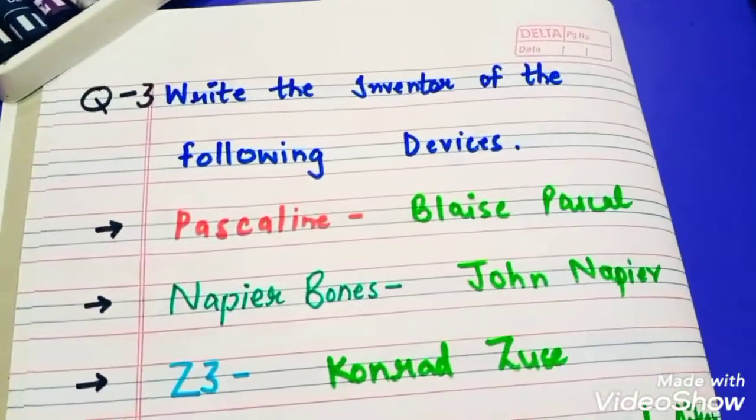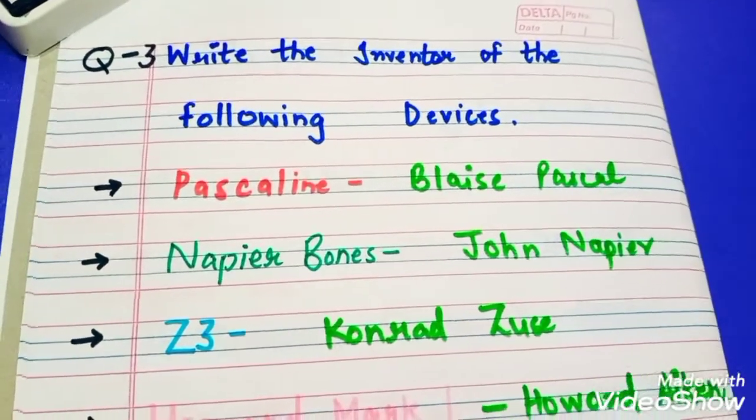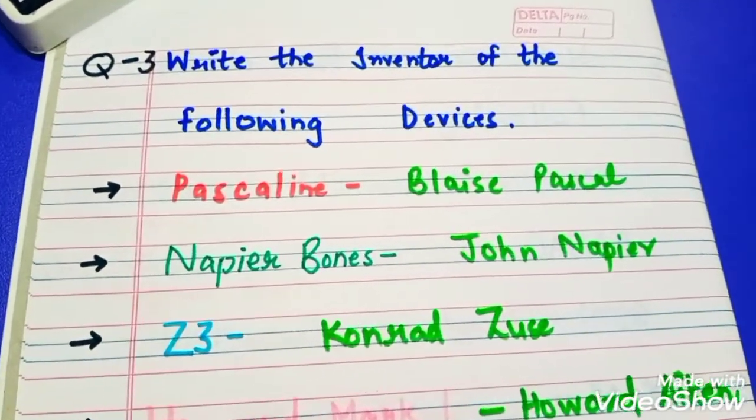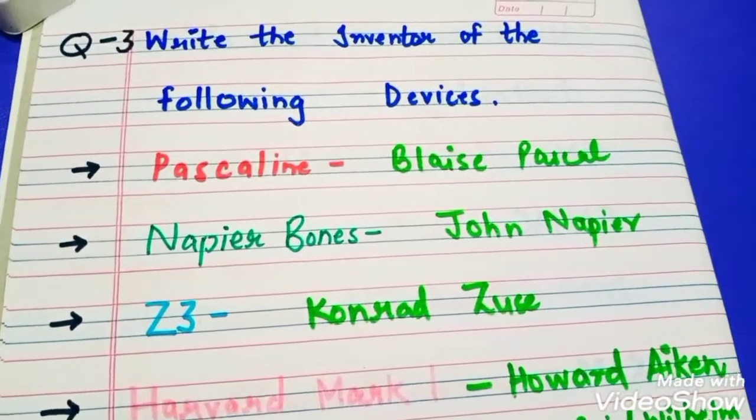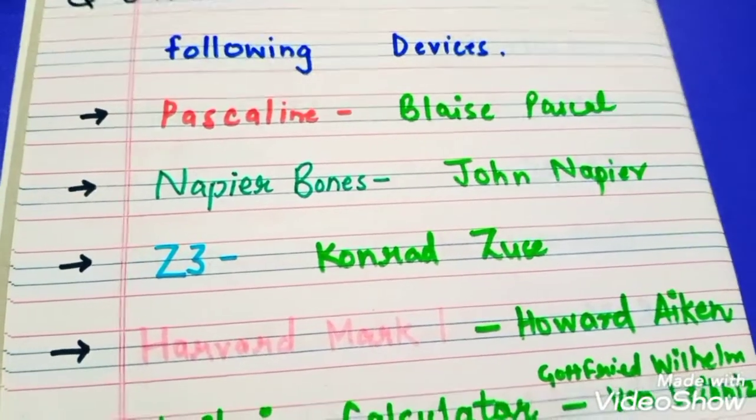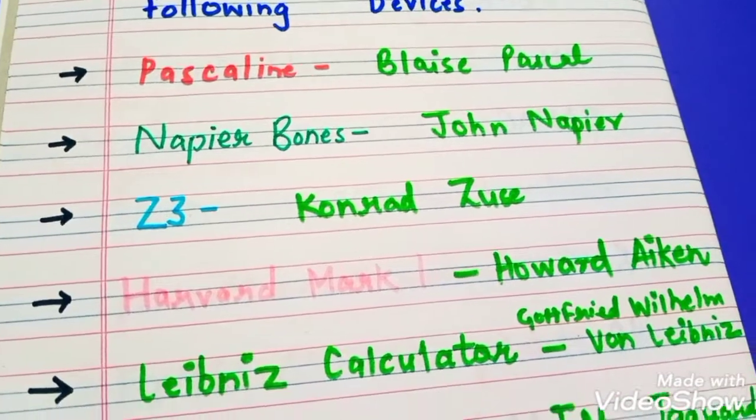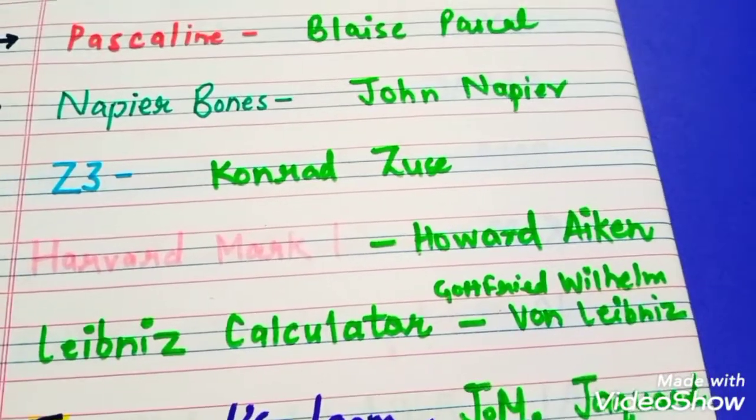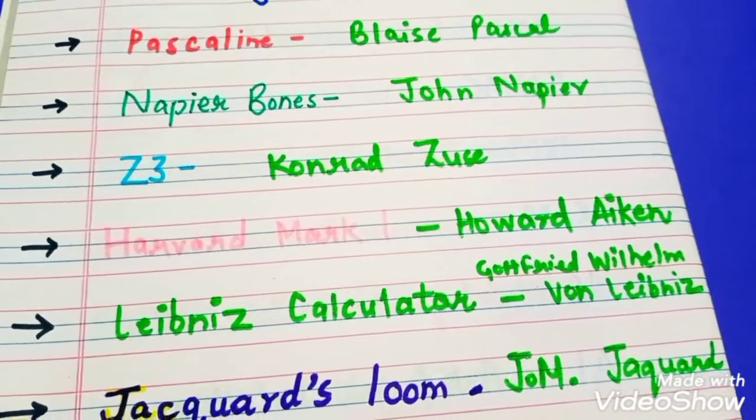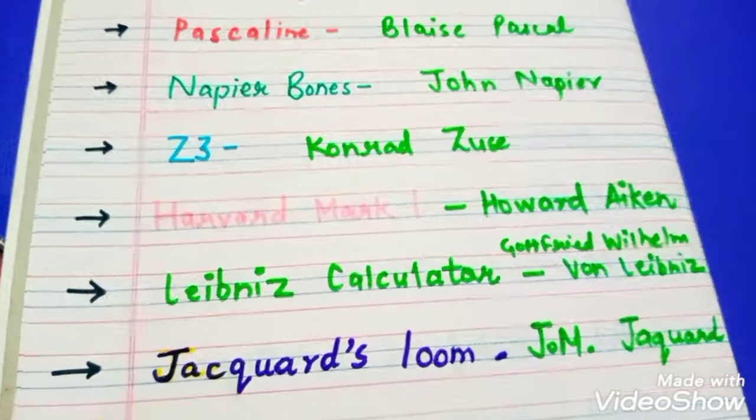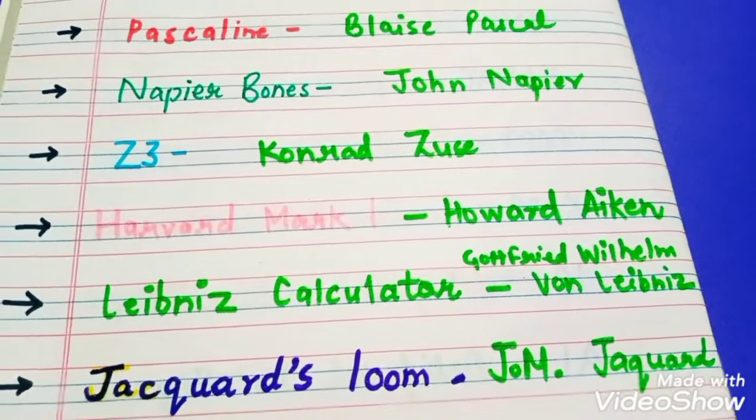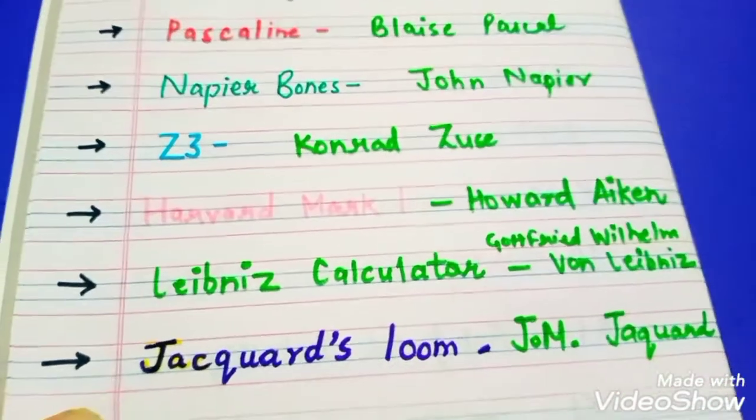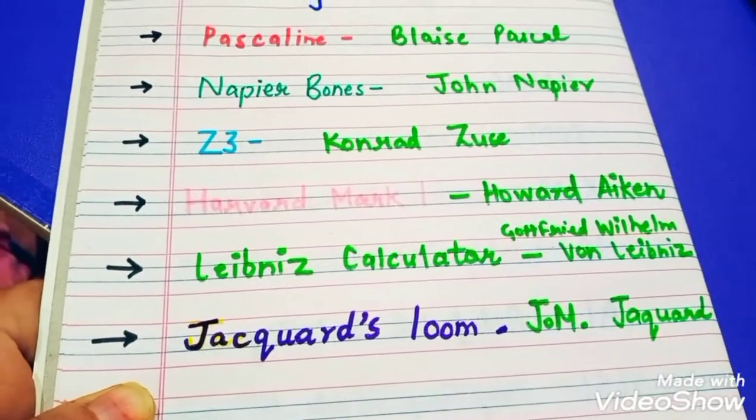Write the inventor of the following devices: Pascaline - Blaise Pascal. Napier Bones - John Napier. Z3 - Konrad Zuse. Harvard Mark 1 - Howard Aiken. Leibniz Calculator - Gottfried Wilhelm von Leibniz. Jacquard's Loom - JM Jacquard.